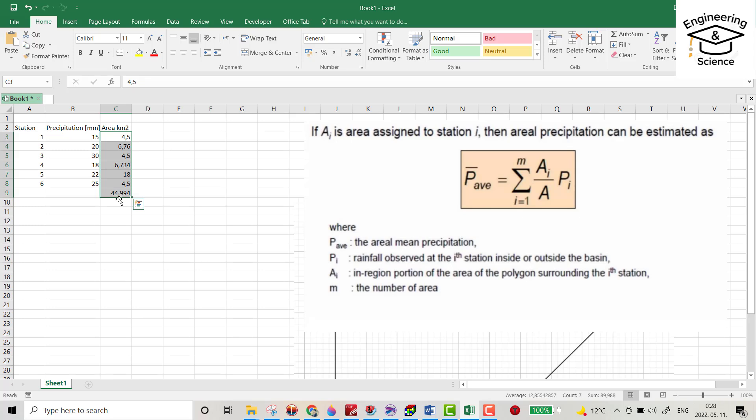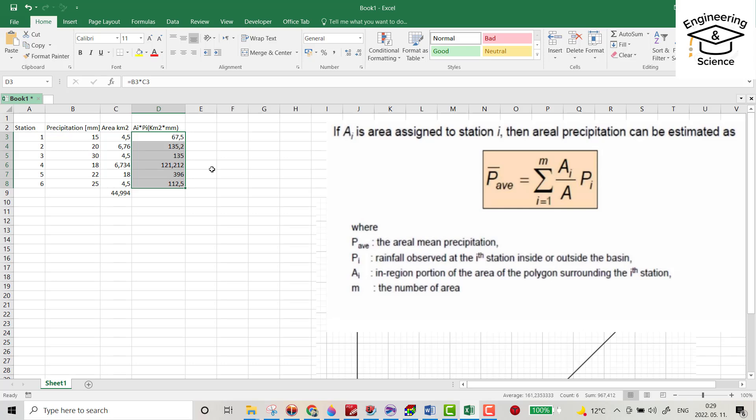P or A_i multiplied by p_i equals just this one multiplied by this one - 67.5 - and drag it. You need square kilometers multiplied by millimeters. That is the unit. Make autosum.